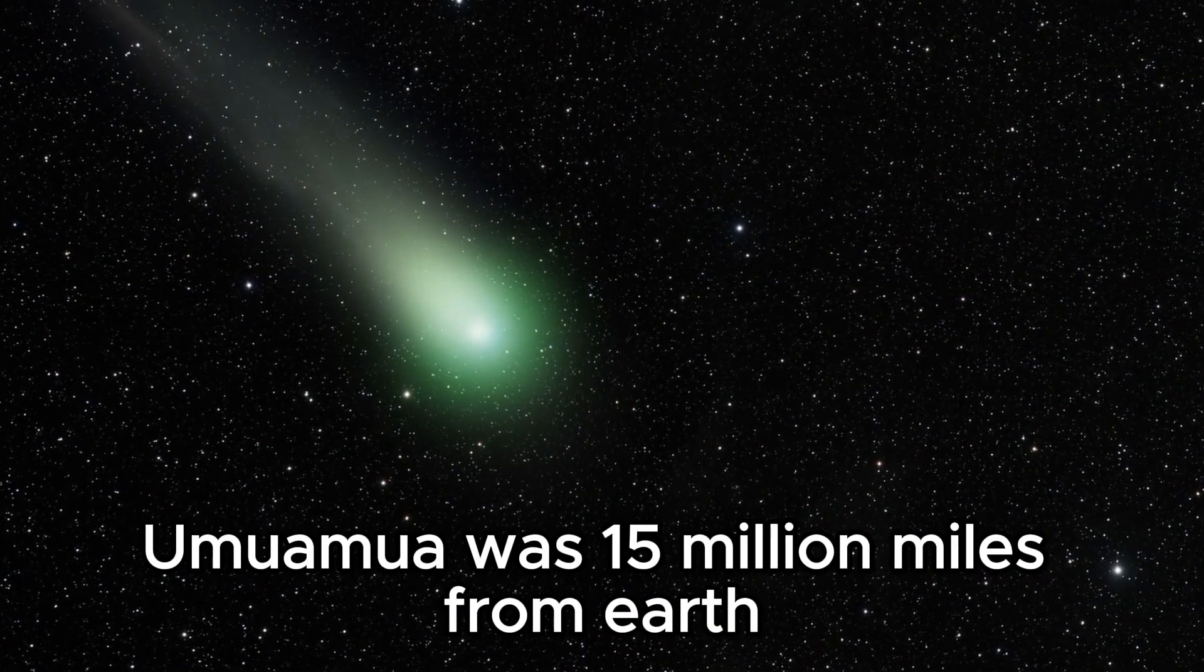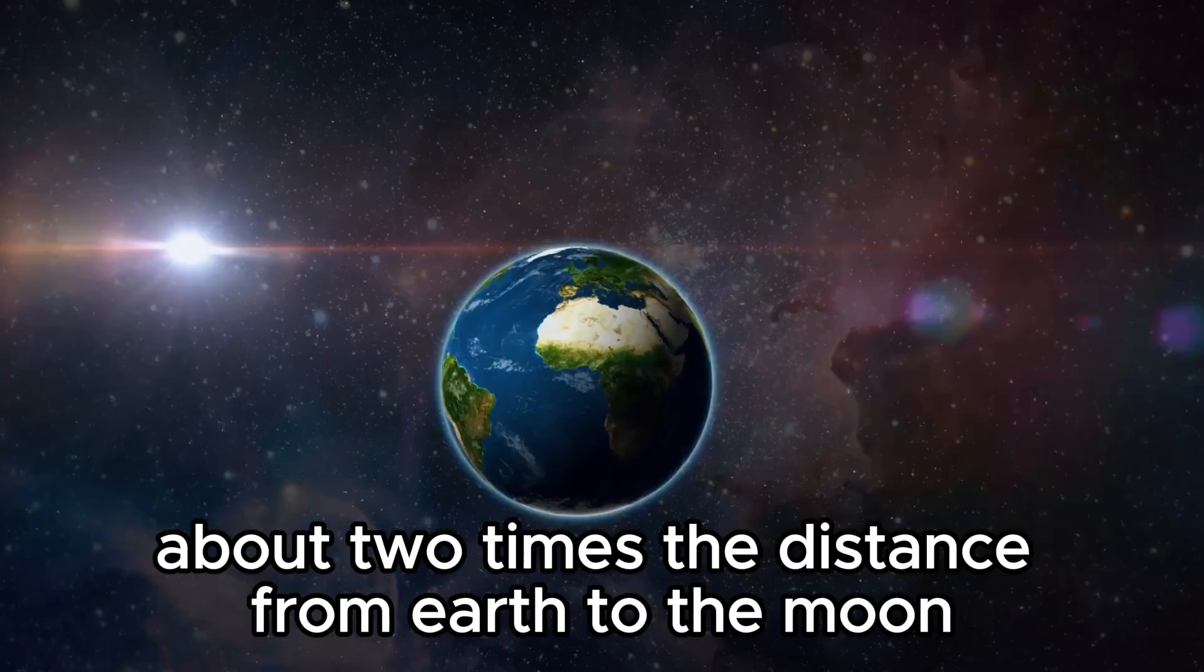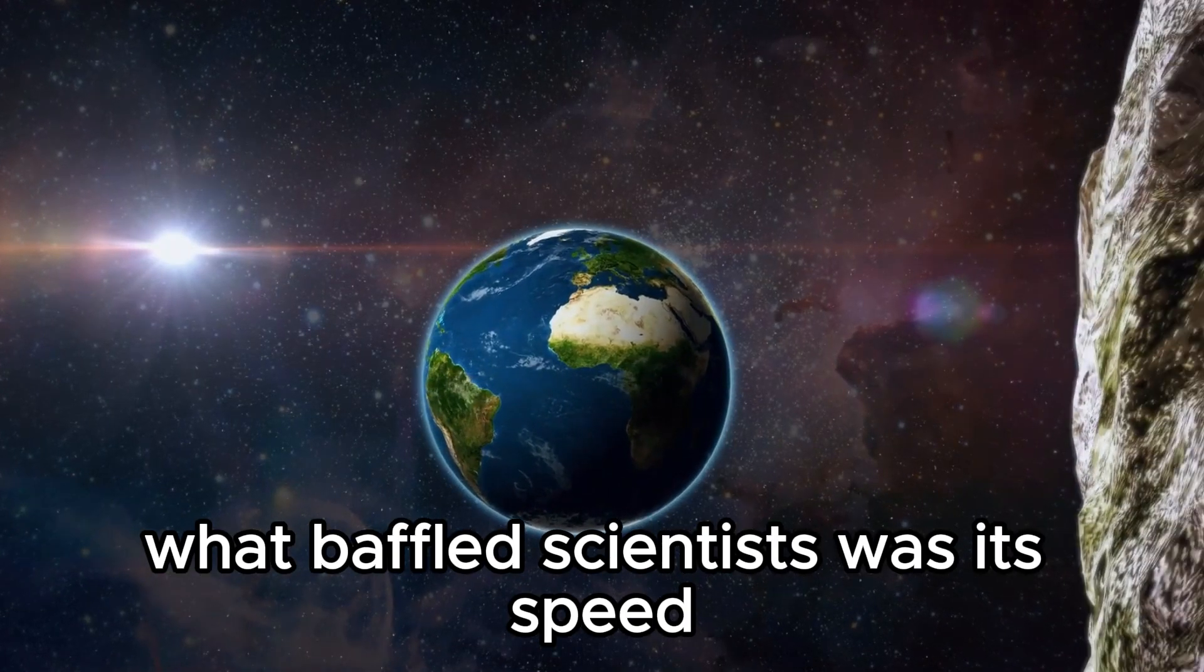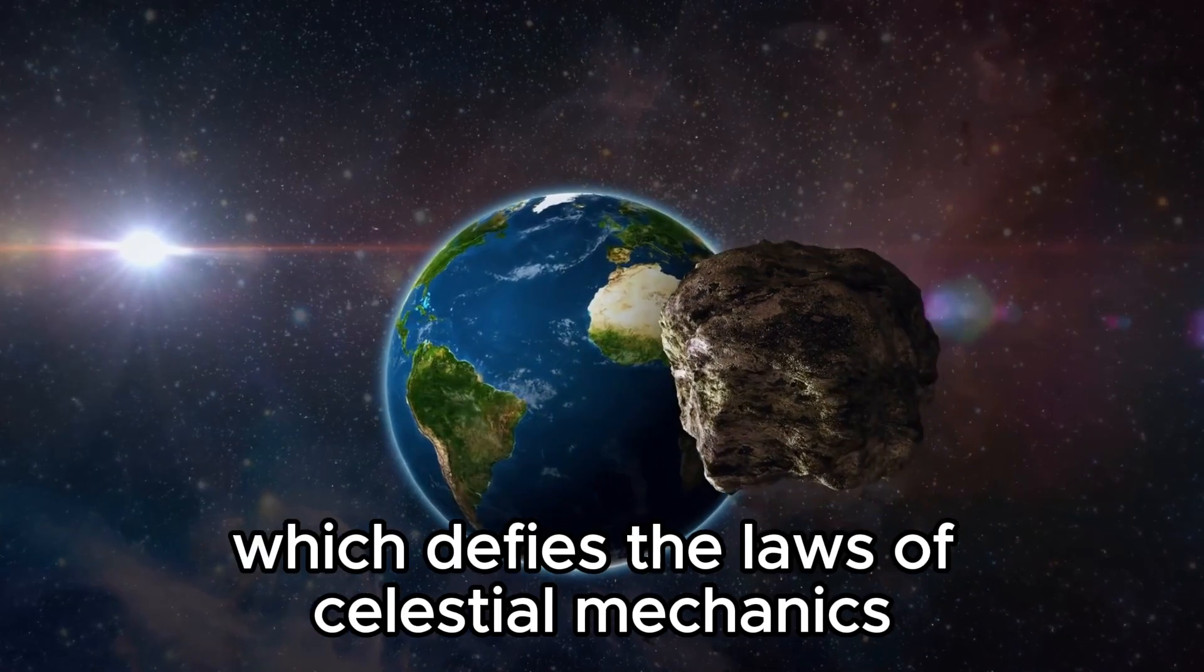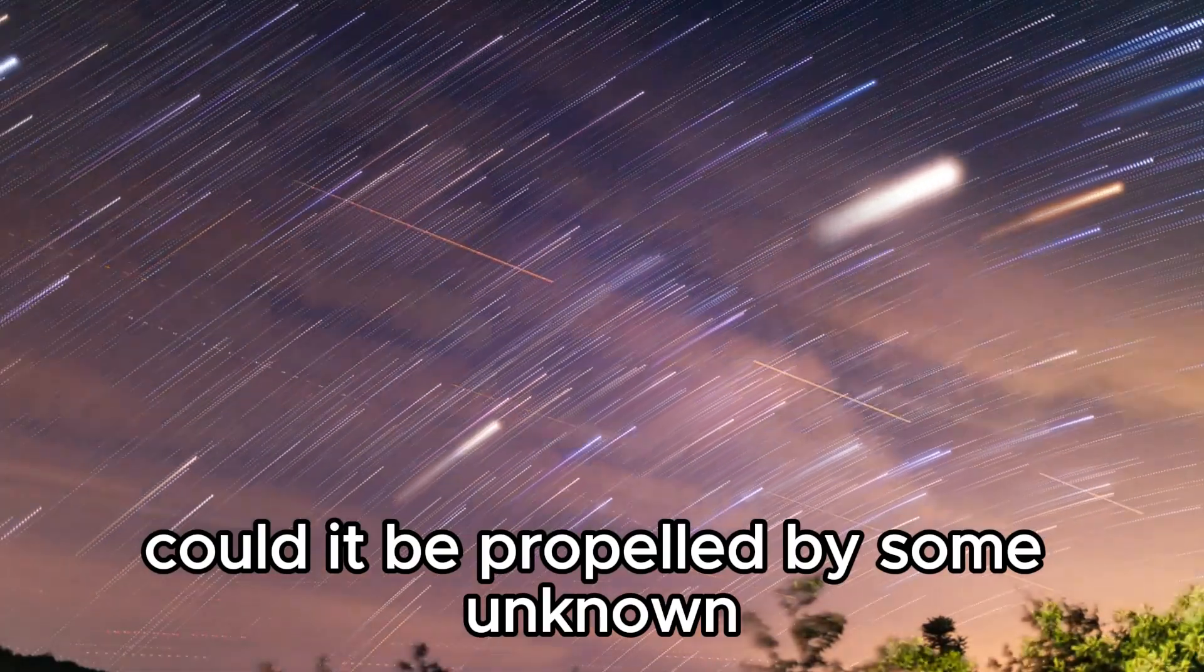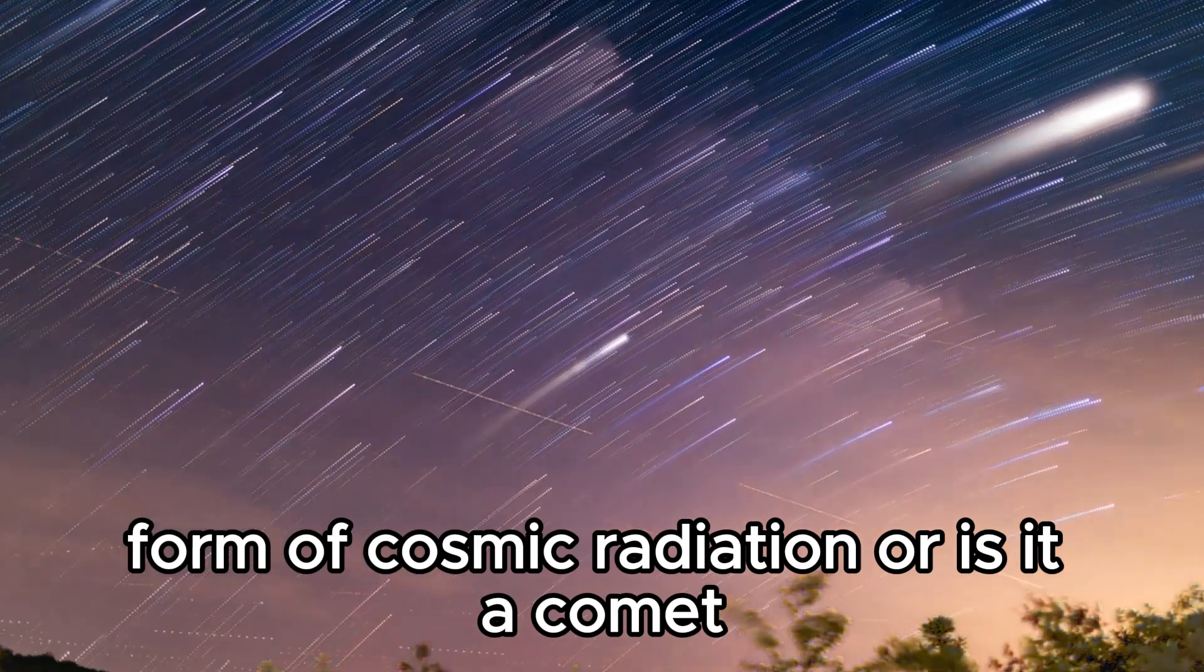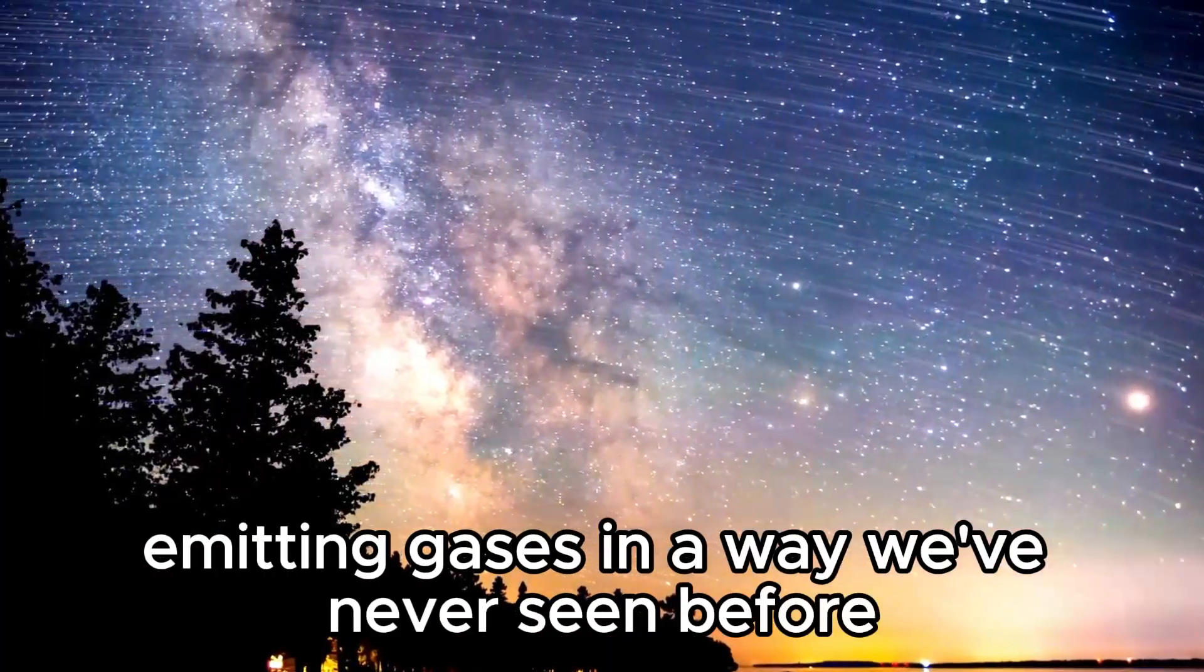Oumuamua was 15 million miles from Earth, about two times the distance from Earth to the moon. What baffled scientists was its speed. As it zipped around the sun, its rate increased, which defies the laws of celestial mechanics. Could it be propelled by some unknown form of cosmic radiation? Or is it a comet emitting gases in a way we've never seen before?